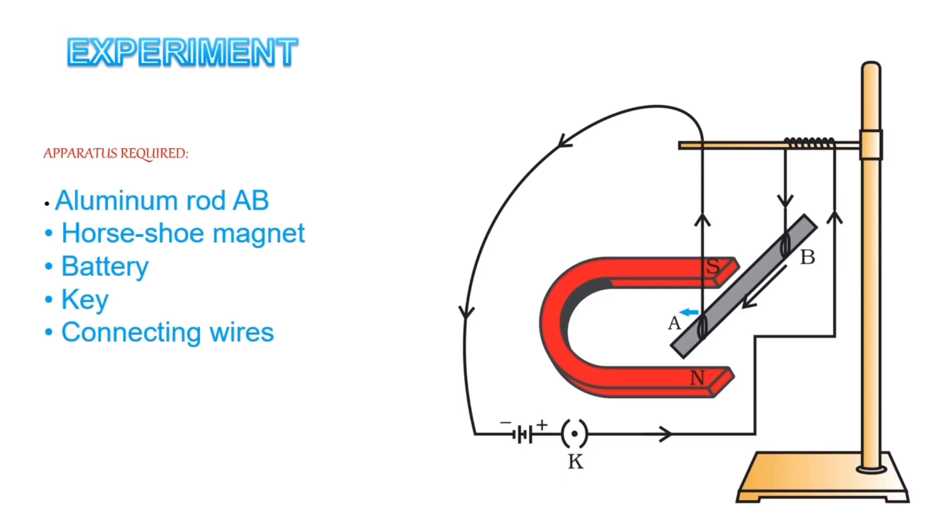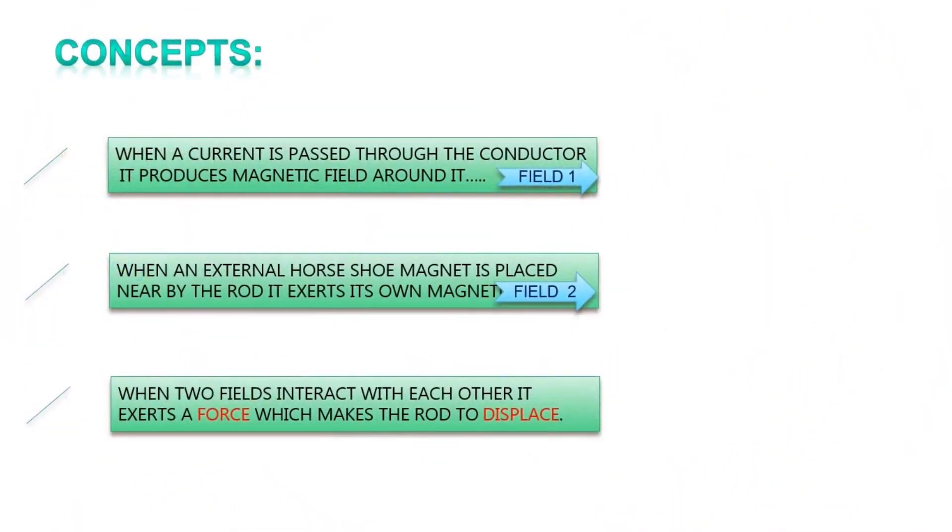Next, place a horseshoe magnet in such a way that the rod lies between the two poles with the magnetic field of the external magnet facing upwards, which means the north pole placed vertically below and the south pole vertically above. It is observed that the rod displaces towards left. Now, change the direction of the current by changing the terminals of the battery. The rod is displaced towards right. Again, change the direction of magnetic field by interchanging the two poles of the magnet. The displacement of the rod changes its direction.